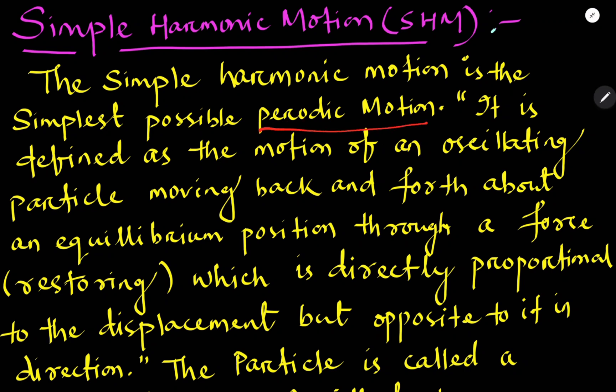What do we mean by periodic motion? Periodic motion is the motion which repeats after equal intervals of time. It is called periodic motion or harmonic motion. The definition of simple harmonic motion is as follows.